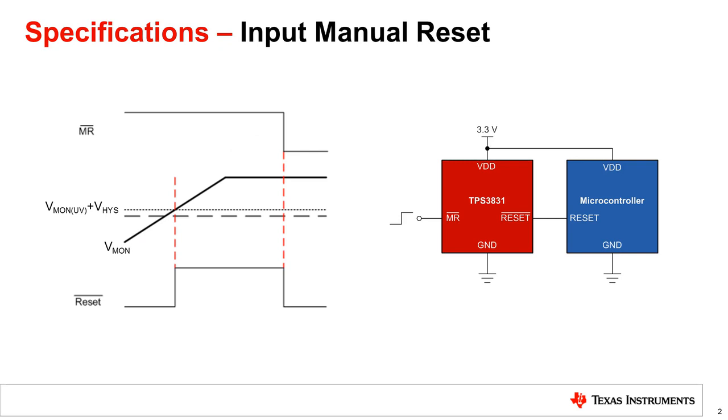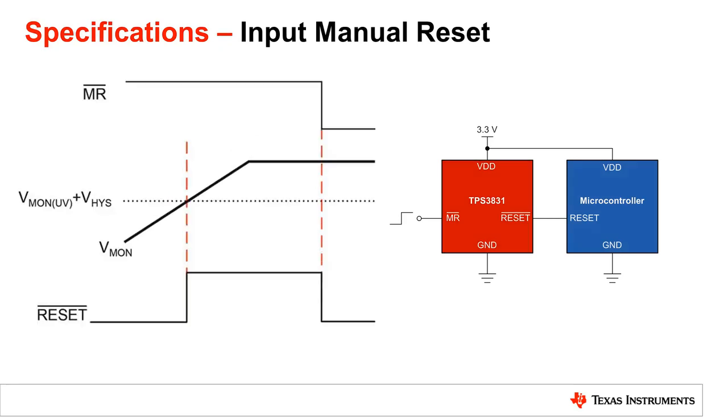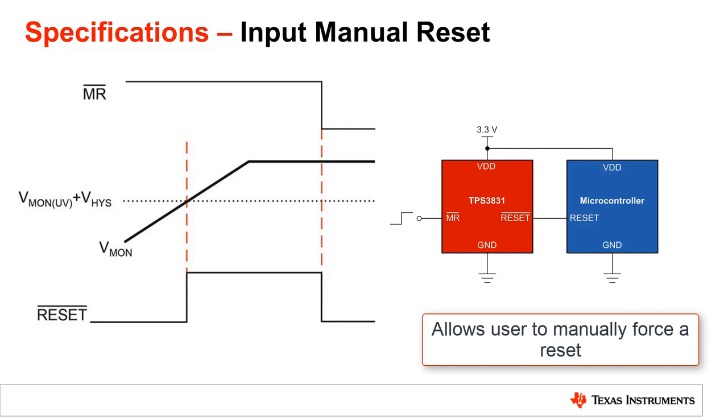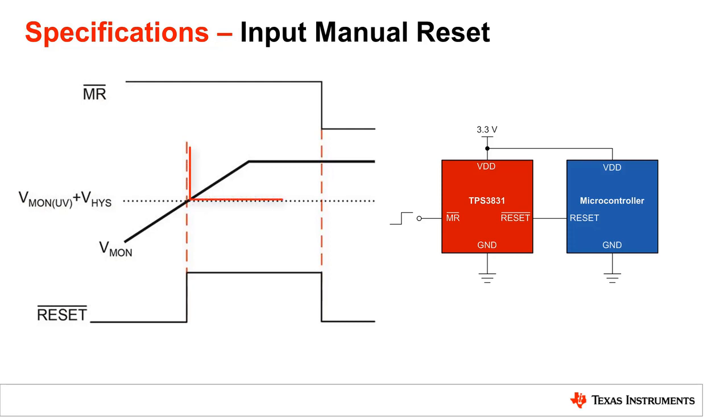To conclude, some voltage supervisors also include a feature called manual reset, or MR. MR allows a user to force a reset assertion at the output of the supervisor regardless of the monitored voltage. As an example, when VMON is above the positive going input threshold voltage and the manual reset is asserted, the manual reset takes precedence and the supervisor will assert a reset. The MR can be connected to a push button and press whenever a user wishes for a reset to occur, irrespective of what is happening within the system. This feature is useful for any application where a hard reset may be needed to reset the system in the case the processor is in a brownout state and unresponsive.